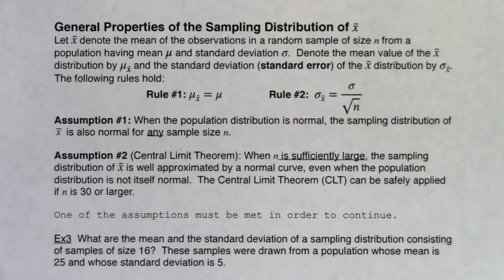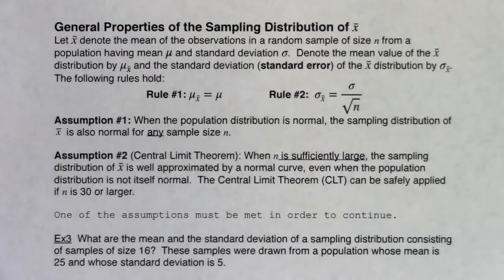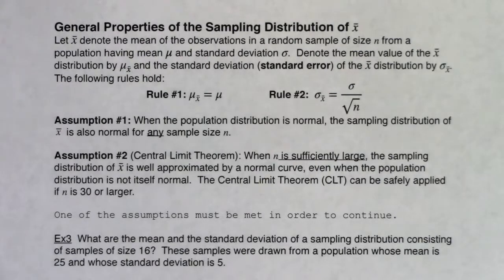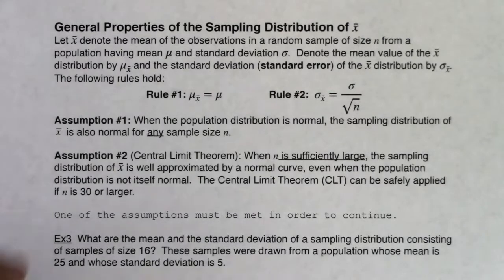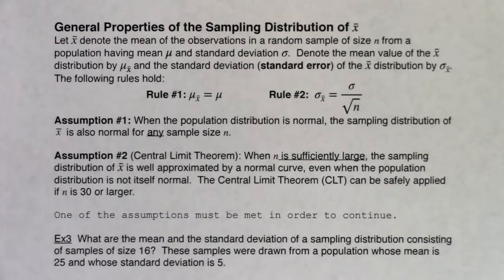We're going to officially pick up the central limit theorem for the sampling distribution of X-bar. There are some rules and assumptions we're going to go over, and this is the first time we'll see these assumptions pop up. They'll show up in this chapter 7 and in chapters 8, 9, 10, 11, and 13. So let's pick up these rules.